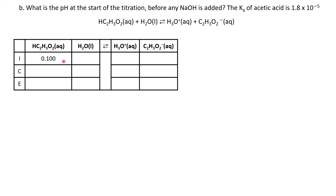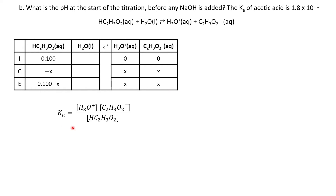Here is my ICE table. Initially, my concentration of acetic acid is 0.1 and I have no product. My change is minus X, then X and X, giving my equilibrium concentrations. Now I write my expression for Ka — products over reactants. Plugging in my value for Ka and all equilibrium expressions, I really want to drop the minus X. Looking at my Ka, it's 10 to the negative fifth, which is small enough that I can drop that minus X — I don't have to use the quadratic equation.